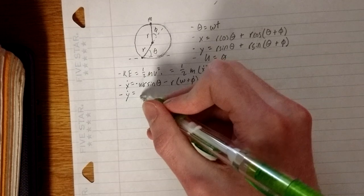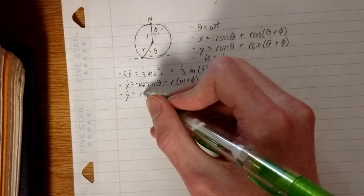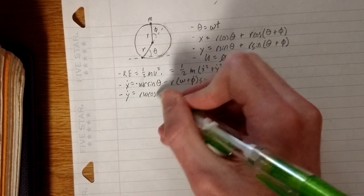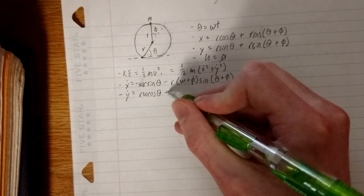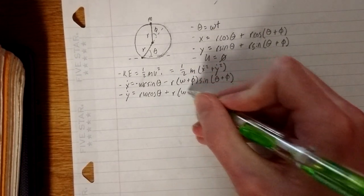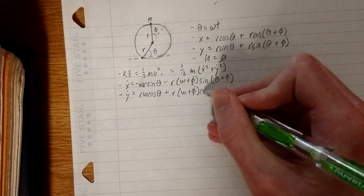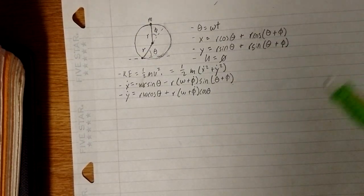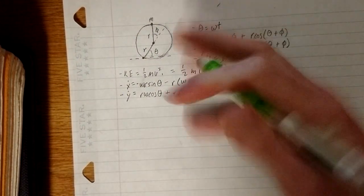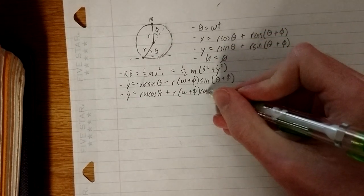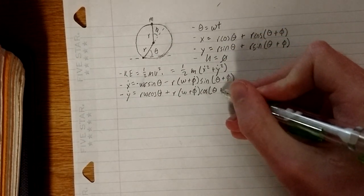And similarly, y dot is equal to r omega cosine theta plus r omega plus phi dot cosine, excuse me, cosine theta plus phi.